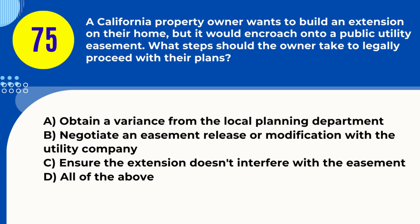Question 75. A California property owner wants to build an extension on their home, but it would encroach onto a public utility easement. What steps should the owner take to legally proceed with their plans? A. Obtain a variance from the local planning department B. Negotiate an easement release or modification with the utility company C. Ensure the extension doesn't interfere with the easement D. All of the above. Answer: D. All of the above. Explanation: Building on an easement requires a variance, negotiating with the utility company, and ensuring no interference.